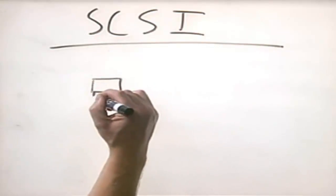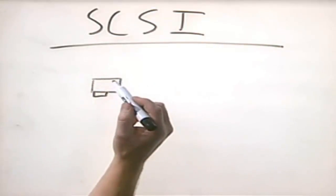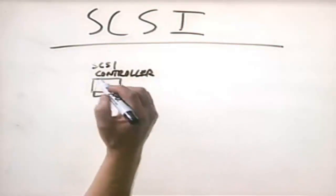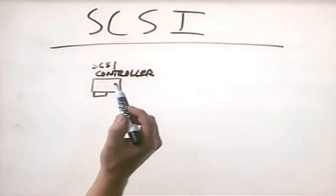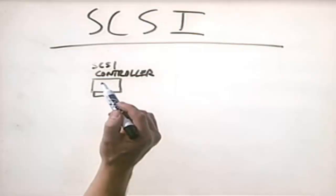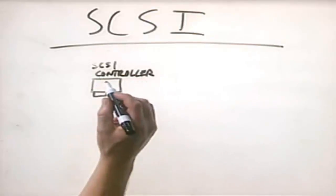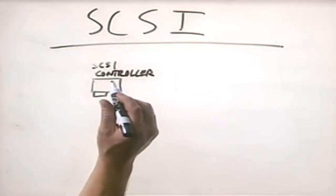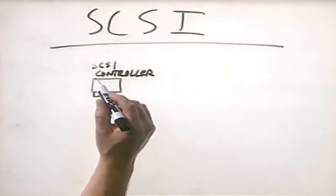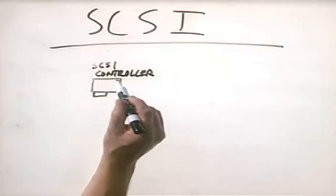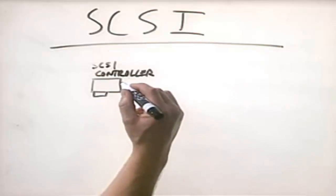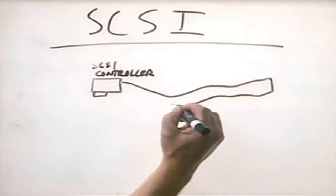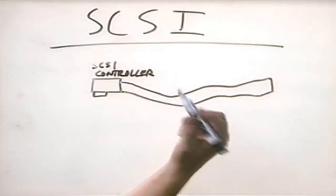With SCSI we have a card installed in the PC system — this card is the SCSI controller. This is a key difference from IDE: with IDE the controller resides on the drive itself, but with SCSI we have a dedicated card or built-in interface that controls all the SCSI devices in the system. Similar to IDE, a ribbon cable comes out of the controller and is used to connect the devices.